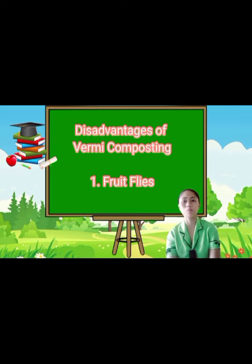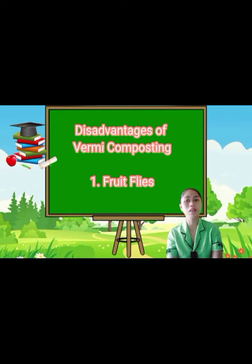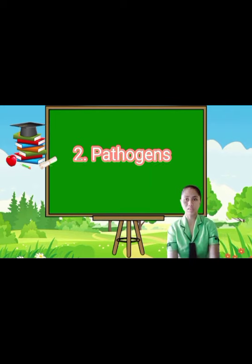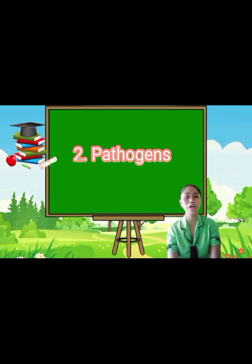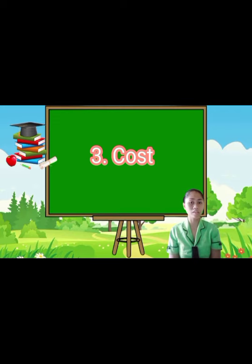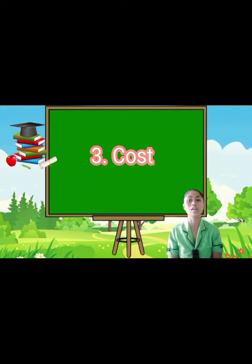Disadvantages of vermicomposting. First, fruit flies — while completely harmless, fruit flies can be annoying, and organic compost, whether outside the home or inside, can and will attract fruit flies. Second, pathogens: because of the reduced build-up of heat, vermicomposting encourages pathogens more than when using a normal composting method. Third, cost: while the cost involved with vermicomposting is relatively low, there is an initial price tag involved — you need to invest in bins, and if you can't get enough worms from your garden, you will have to invest in those too.